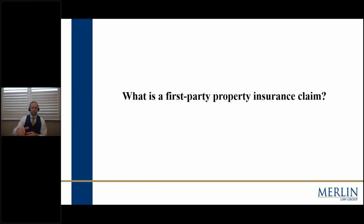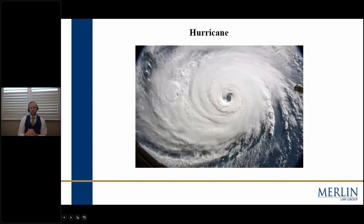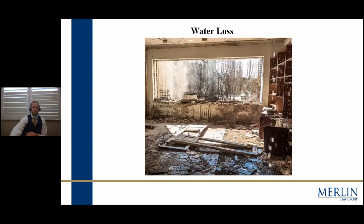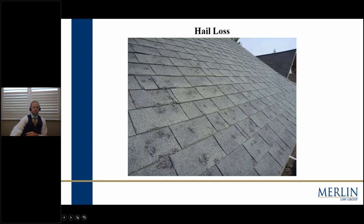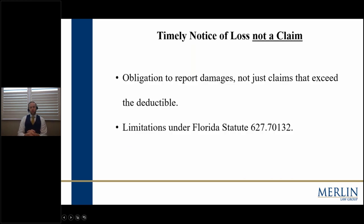What are some examples of first-party claims? Obviously a hurricane — Hurricane Irma, Hurricane Michael — those are claims that would be under the condominium association or your homeowners association's policy. Another common example is a water loss, a fire loss, and a hail loss. Those are types of claims under your insurance policy where you would need to consult with a first-party property insurance attorney. Another type of loss we're dealing with right now is business interruption regarding COVID-19 claims.